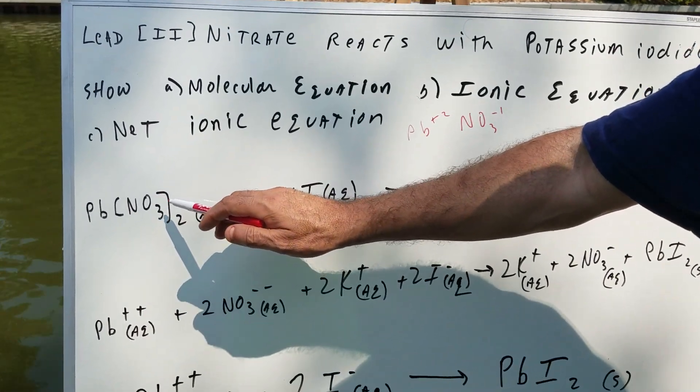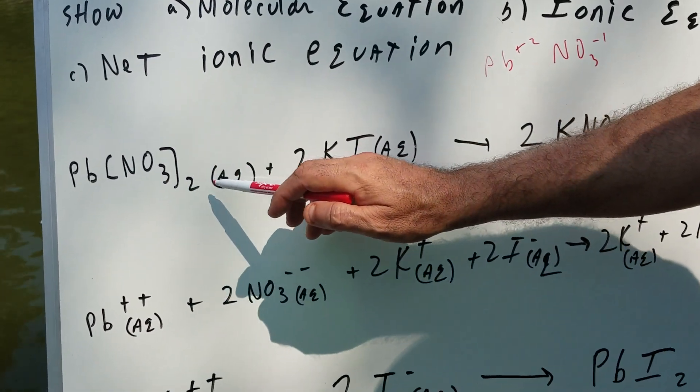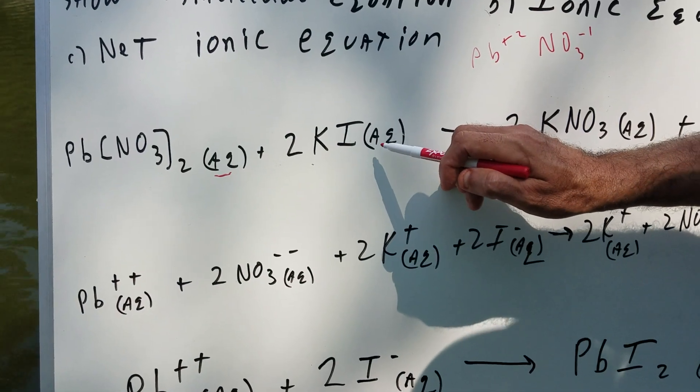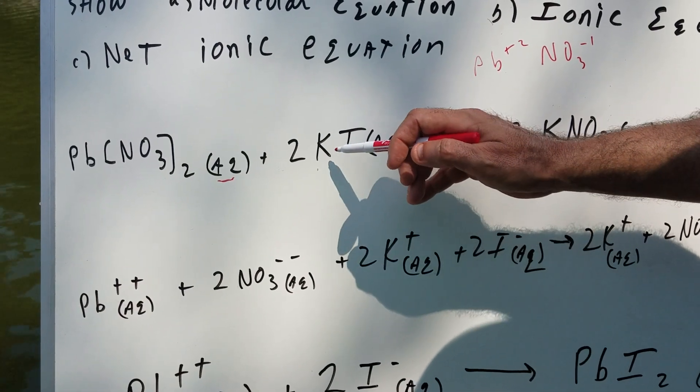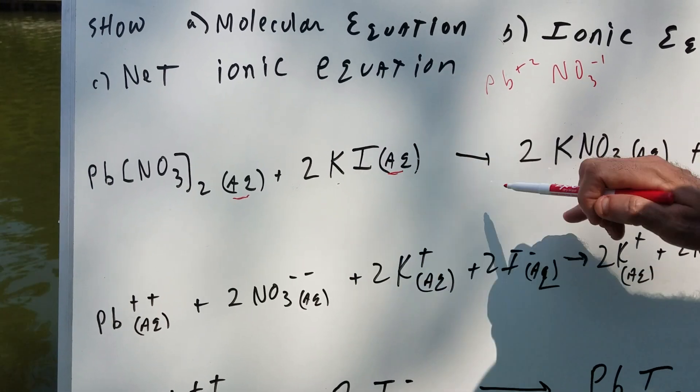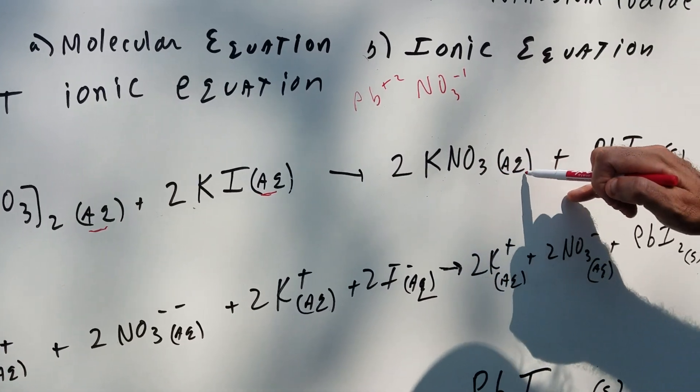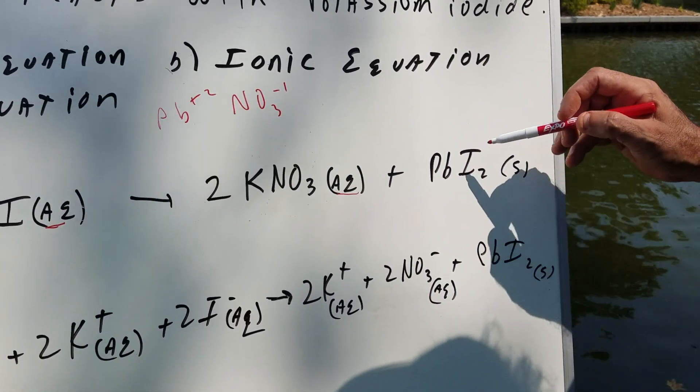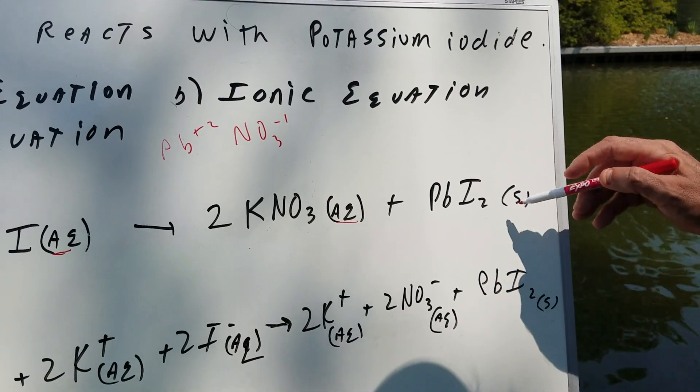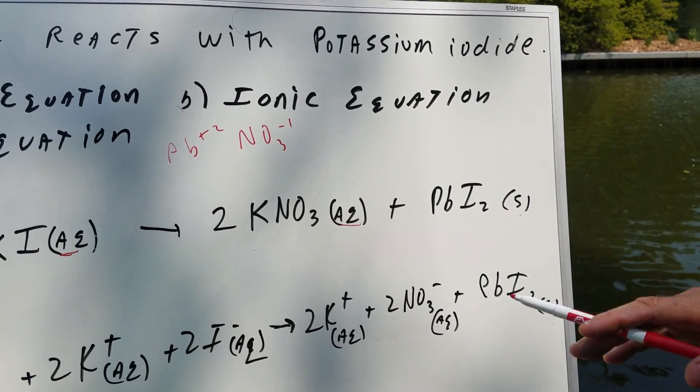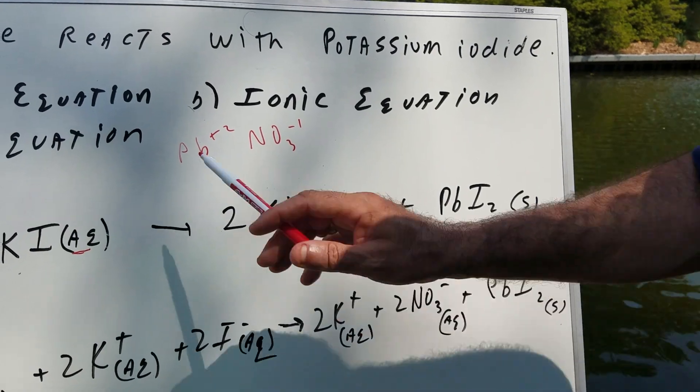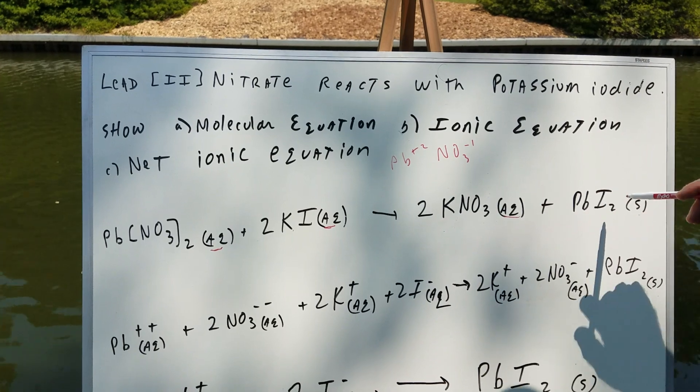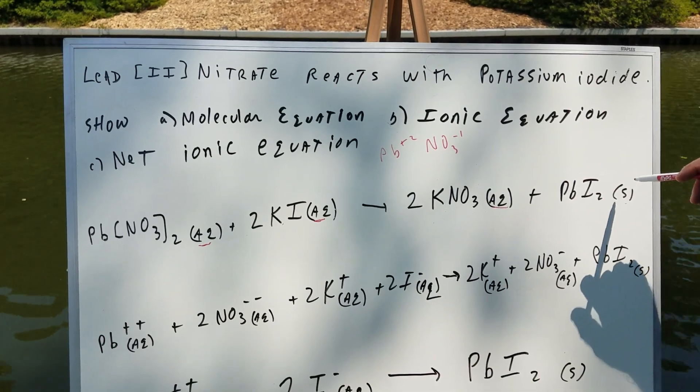Now go back to the solubility rules. All nitrates are soluble. That's why I write aqueous. All iodides are soluble, especially if they have a group 1A metal on it, so that would be aqueous. Again, all nitrates are soluble, aqueous. But now when we come to this, the solubility rule says that iodides of lead are insoluble, so that's why I know that's a solid. So the first thing you need to do is when you get the molecular equation, make sure you got the species that are soluble and the species that are the insoluble, meaning the solid.